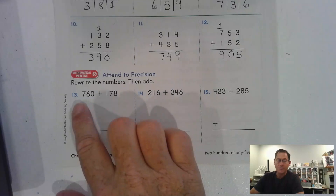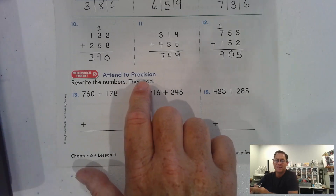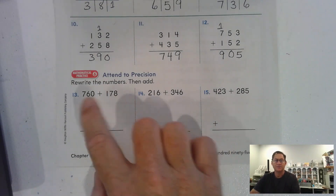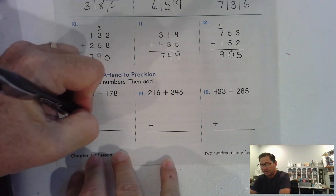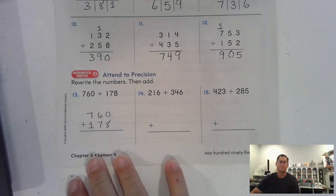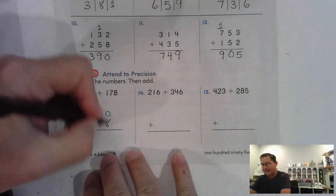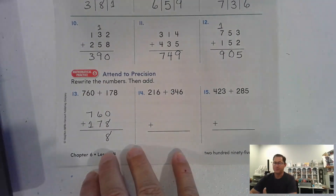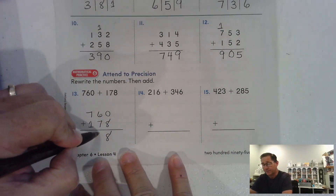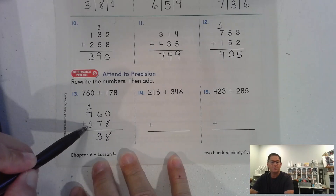Number thirteen: rewrite the numbers then add. Attend to precision — that means be exact and careful. Line up the place values: 760 plus 178 written vertically. Eight and zero is eight ones, no regrouping. Seven and six is thirteen tens — regroup as one hundred and three tens.